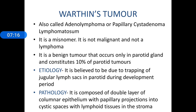Warthin's tumour is also known as adenolymphoma or papillary cystadenoma lymphomatosum. It is a misnomer — it is not malignant and not a lymphoma. It is a benign tumour that occurs only in the parotid gland and constitutes about 10% of parotid tumours. It is believed to be due to trapping of the jugular lymph sacs in the parotid gland during development. Pathologically, it is composed of two layers of columnar epithelium with papillary projections into cystic spaces and lymphoid tissue in the stroma — hence the name papillary cystadenoma lymphomatosum.